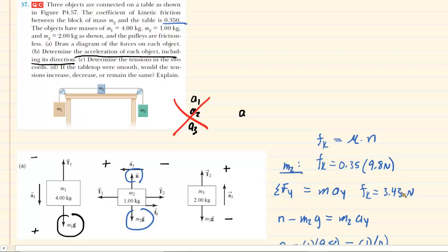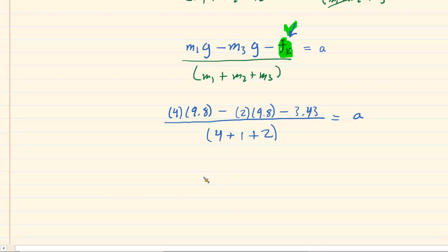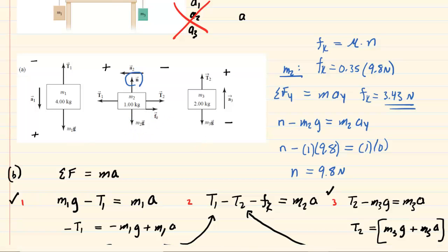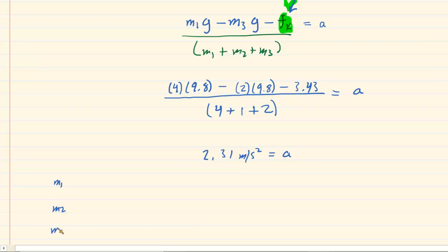Substituting 3.43 N for the kinetic friction and plugging in all known values into the acceleration expression, we find that the acceleration for each block is 2.31 meters per second squared. The directions are: M1 accelerates downward, M2 accelerates to the left, and M3 accelerates upward — all at 2.31 m/s². That completes part B.